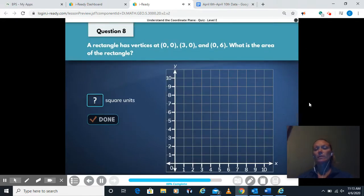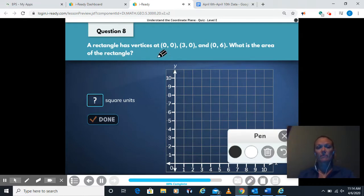A rectangle has vertices at 0, 0, 3, 0, and 0, 6. What is the area of the rectangle? On this one, I'm going to take my pencil out, and I'm going to draw a dot at each of those vertices.